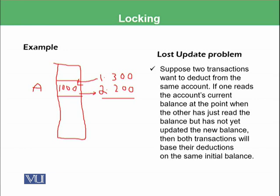So what will happen? The 1000 from transaction 1 will become 700 after subtracting 300, and that 700 will be saved. However, transaction 2 had read 1000 and that 1000 will be subtracted by 300, and again it will be saved on the same location making it 800 instead of the correct 400.